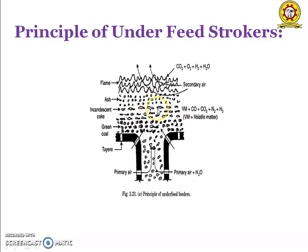Primary air with water is supplied here. The combustion takes place between the incandescent coal and the green coal. Here the combustion takes place with carbon dioxide, carbon monoxide, nitrogen, and oxygen reacting. When the coal undergoes complete combustion, some ash is formed. In the flames, carbon dioxide, oxygen, hydrogen, and water are present. When secondary air is supplied, complete combustion takes place between the incandescent coal and the green coal. These types are used for complete combustion.